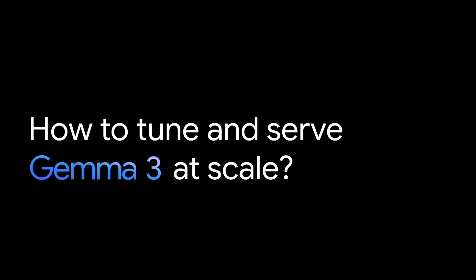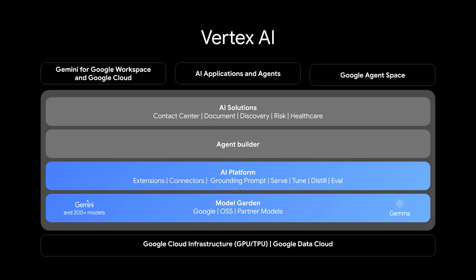So where do you get the compute power? And how can you handle all the complexity around tuning and serving these models, especially where many users need access? That's exactly where Vertex AI steps in. Vertex AI connects you to Google Cloud's powerful infrastructure, including specialized hardware like GPUs and TPUs, that you need to adapt and serve these models effectively.